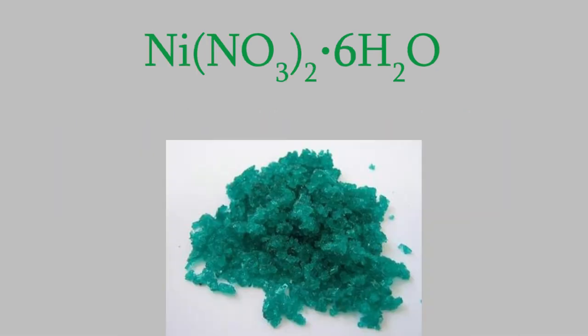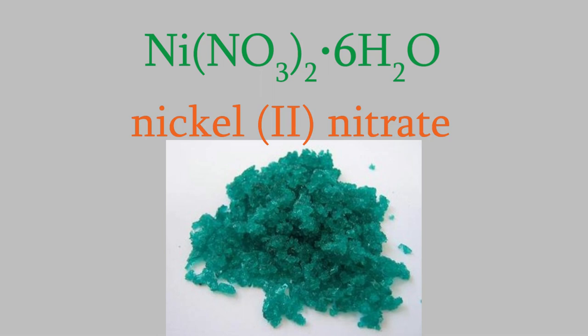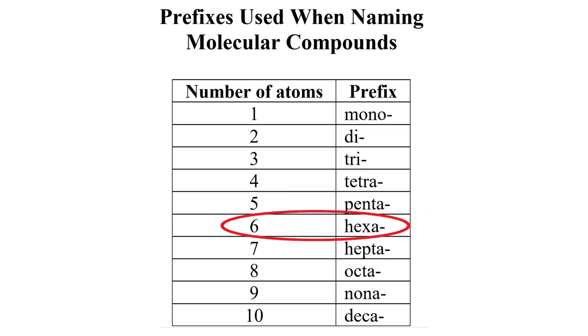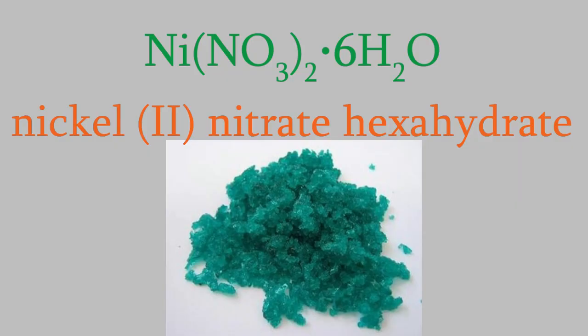Let's look at one more example. Using the naming system we learned in the last video, we know that this molecule is nickel(II) nitrate. But this molecule is a hydrate, because it has water molecules in its crystal structure. Since there are six of them, the chart tells us that this molecule should be called nickel(II) nitrate hexahydrate.